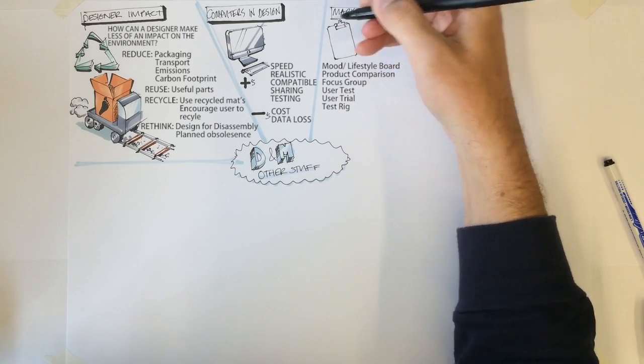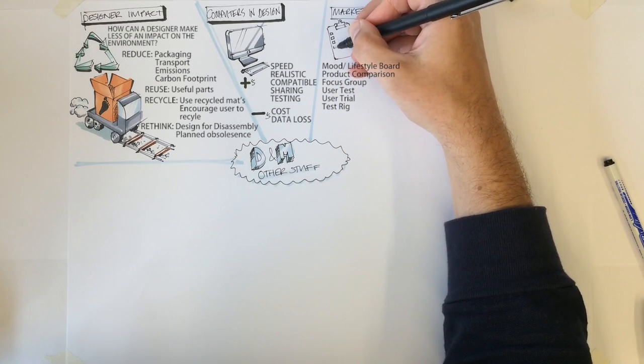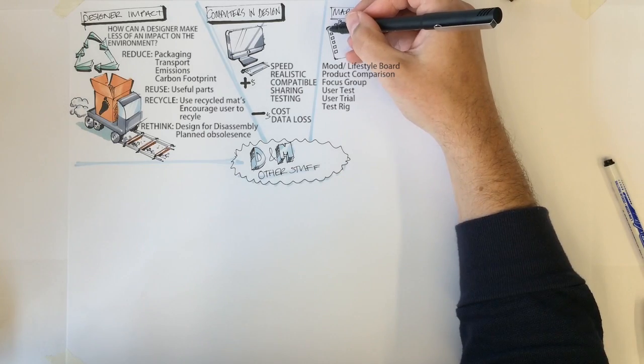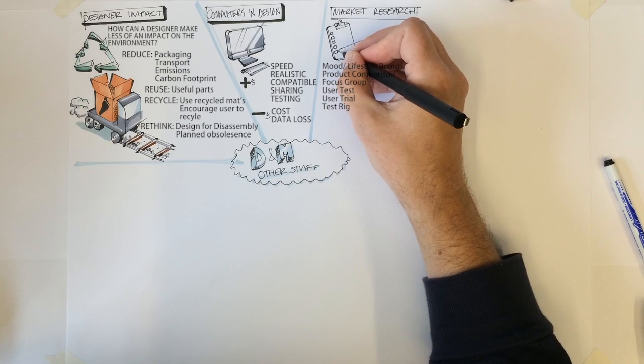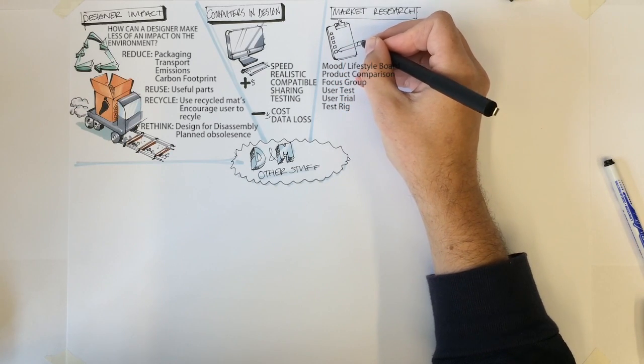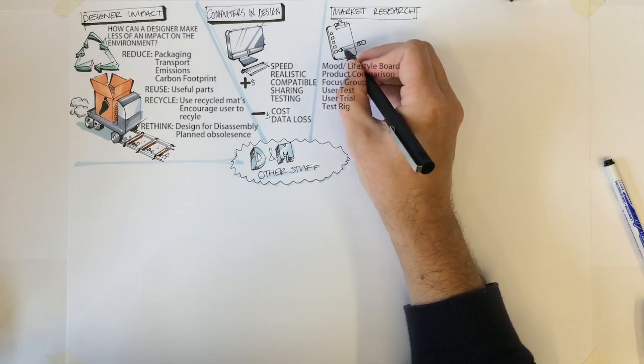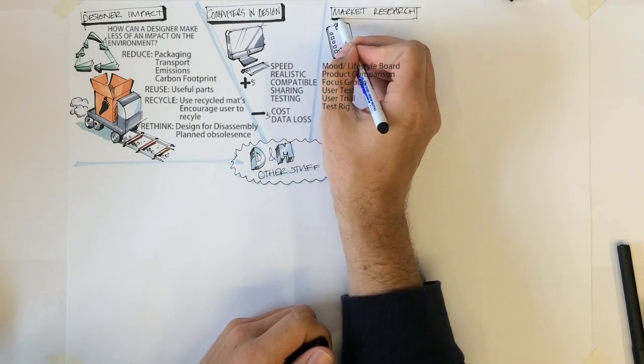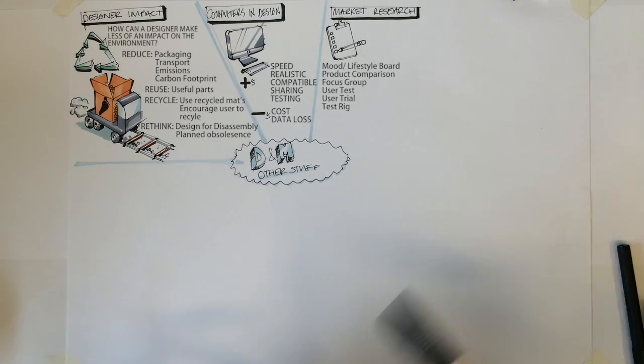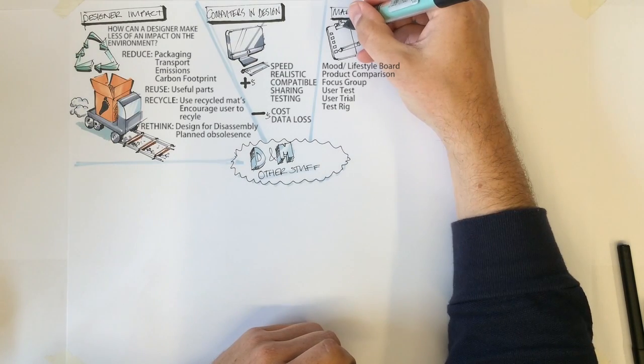User test. A one-off test asking the user several questions as they use the product. Questions asked will be related to the design issues. Do you think the cord is long enough? Is it easy to operate? User trial. A test run over a longer period, usually used to test whether a product will show a drop in performance or to identify durability issues. Does a vacuum cleaner lose suction over period, for example?